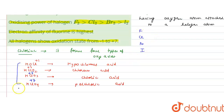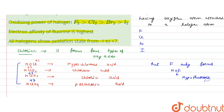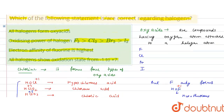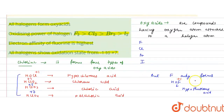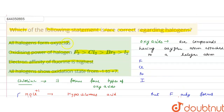Similarly, bromine and iodine form similar types of oxy acids. But fluorine only forms HOF, hypofluorous acid, because it can only show a +1 positive oxidation state — it does not show +3, +5 or +7 oxidation states as it does not have 3d orbitals. Fluorine can only show -1 and +1 oxidation states in compounds. So the statement that all halogens form oxy acids is true, and the first statement is correct.